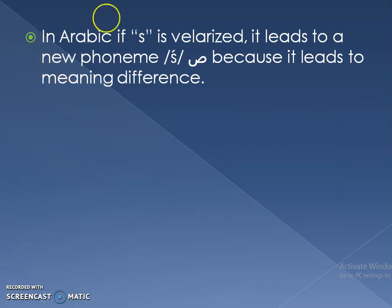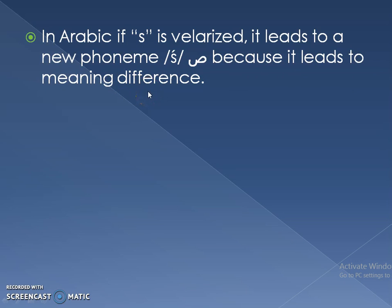In the Arabic language, we notice that if S is velarized, it leads to a new phoneme, because it leads to a meaning difference. So if S is velarized in Arabic, it's a different phoneme and does not give an allophone, as was the case in English, where we differentiated 'some' and 'school' — there was no new phoneme; the same phoneme was used but two different allophones.